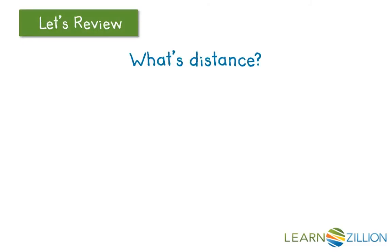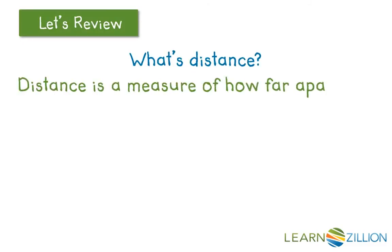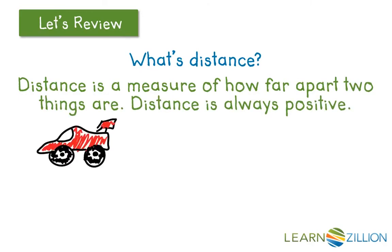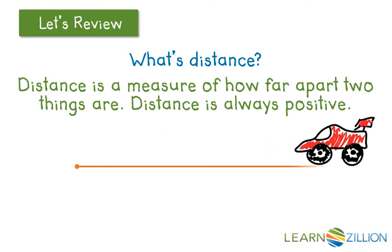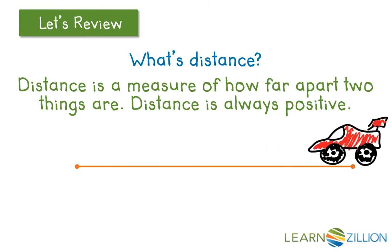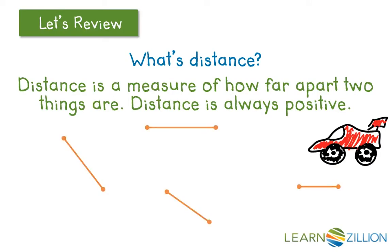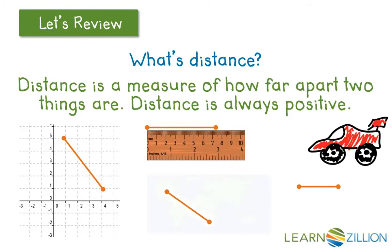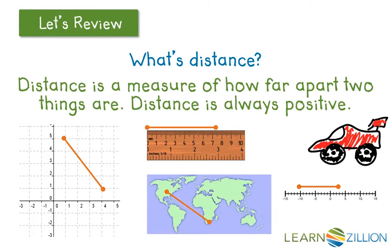What's distance? Distance is a measure of how far apart two things are. Distance is always positive. Even if we are moving backwards — for example, driving a car in reverse — there is still a positive distance being traveled. Here are some more examples of distance on a Cartesian plane, a ruler, a map, and a number line.